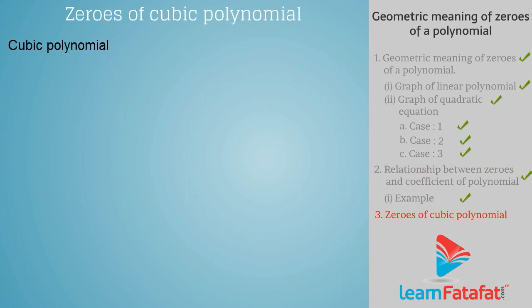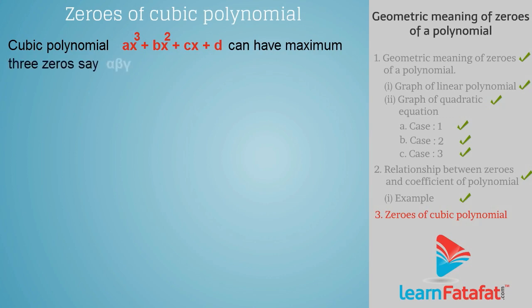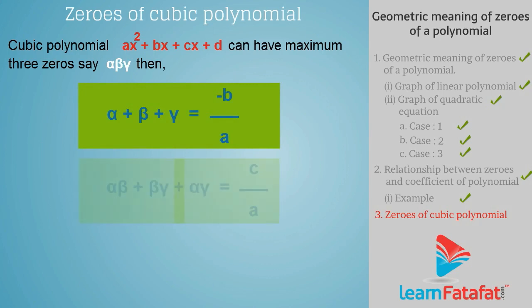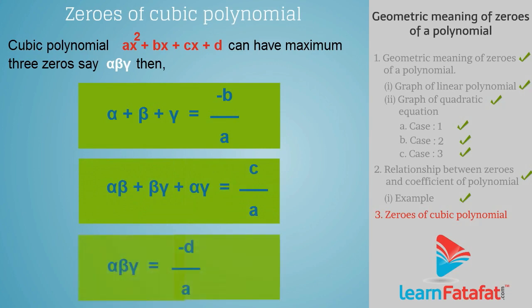Zeros of a cubic polynomial. Similarly, a cubic polynomial ax³ + bx² + cx + d can have maximum three zeros — say, alpha, beta, and gamma. Then: alpha + beta + gamma = -b/a; alpha·beta + beta·gamma + gamma·alpha = c/a; and alpha·beta·gamma = -d/a.